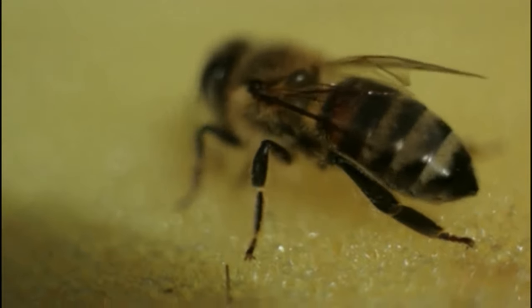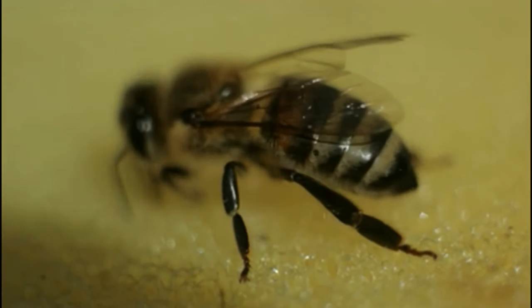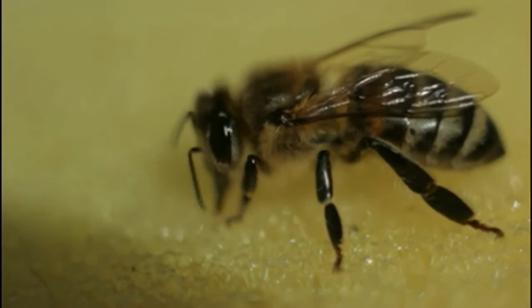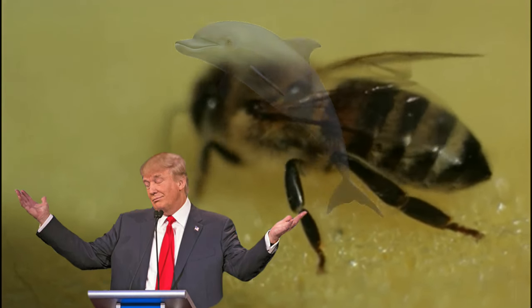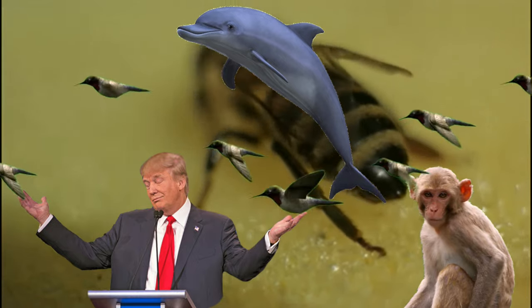The same team of researchers had previously found that honeybees were able to comprehend the mathematical concept of zero, placing them in an elite group of animals including humans, dolphins, primates, and some birds known to be capable of the feat.